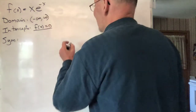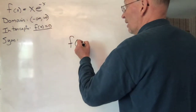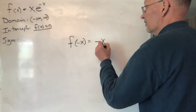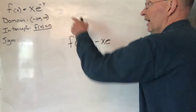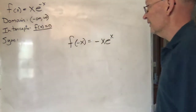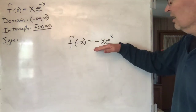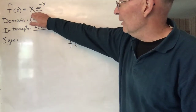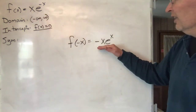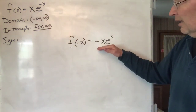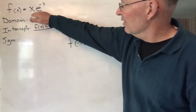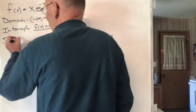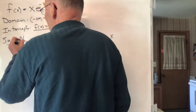Symmetry: f(-x) = -x · e^(-(-x)) = -x · e^x. You look at this and ask: is this exactly the same as f(x)? No. Is it exactly the negative of f(x)? No. So there are no symmetries.